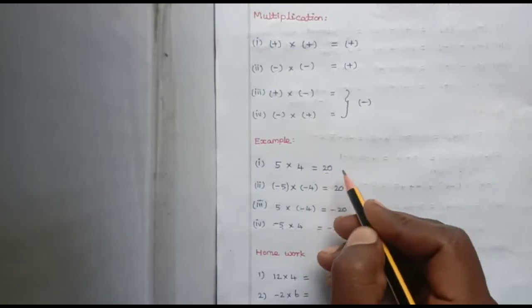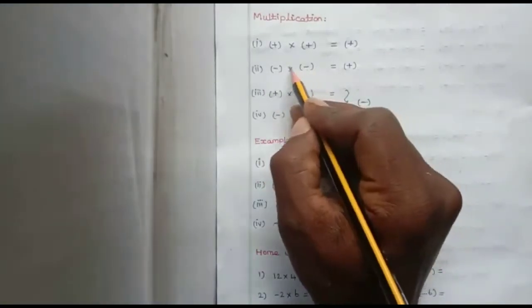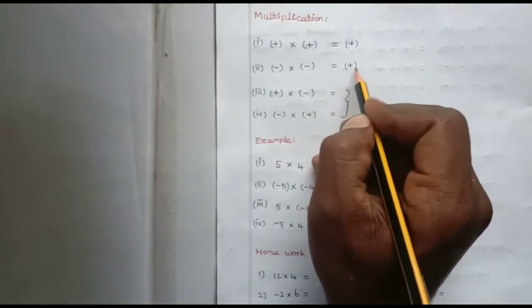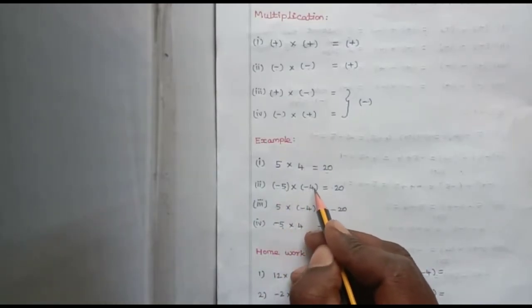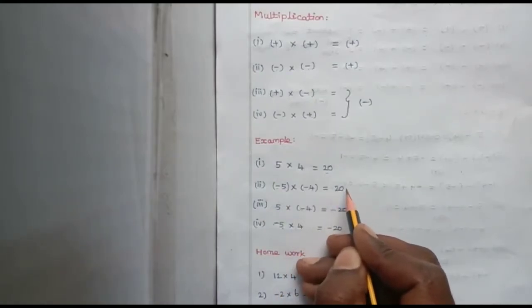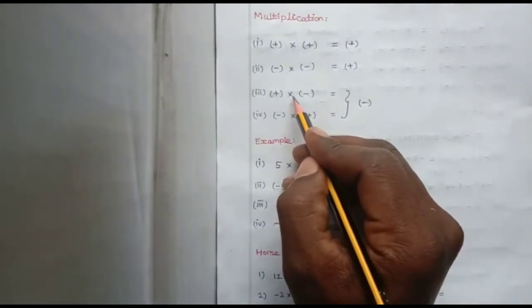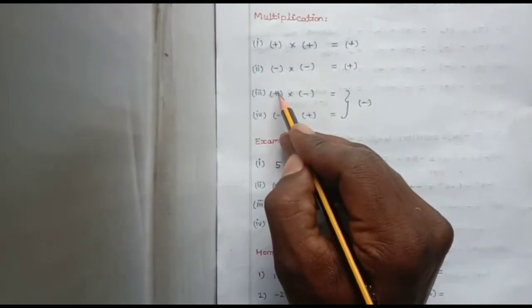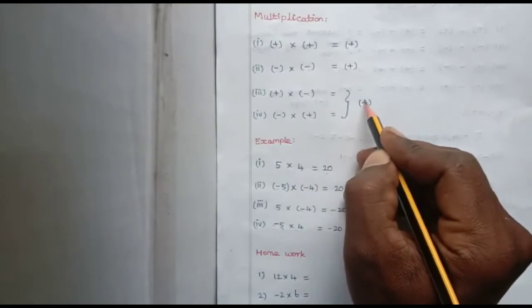The second one: when we multiply two negative integers, we get a positive integer. For example, minus 5 into minus 4 — minus into minus gives plus, so 5 fours are 20. We get the answer plus 20, which is a positive integer.